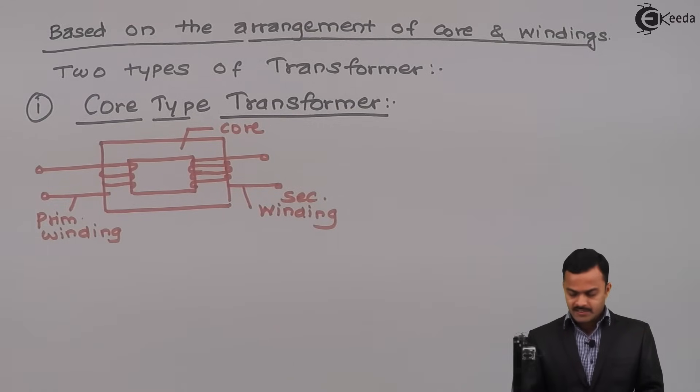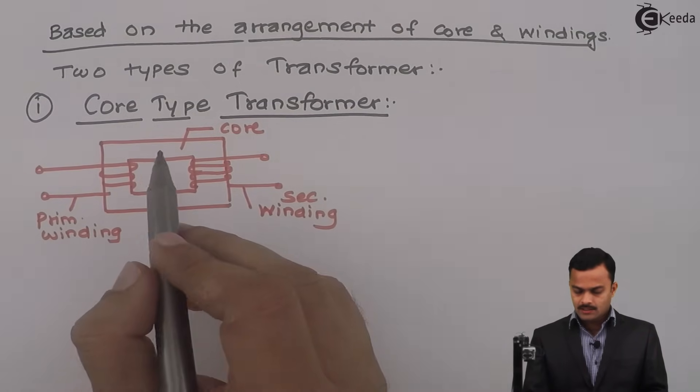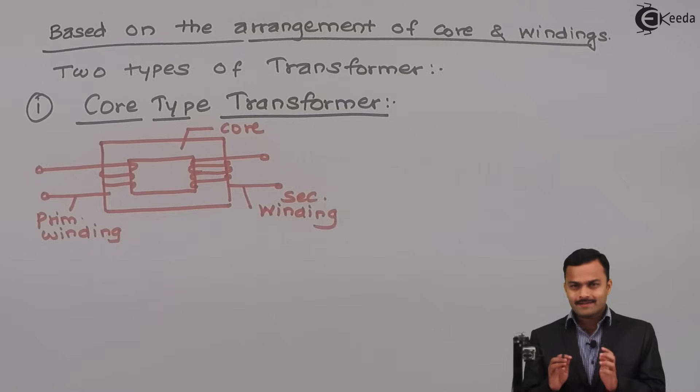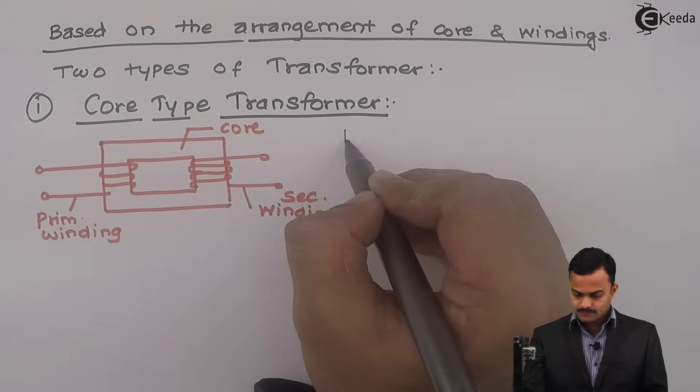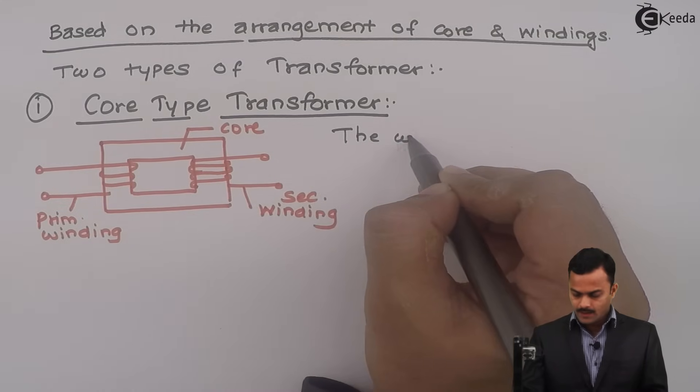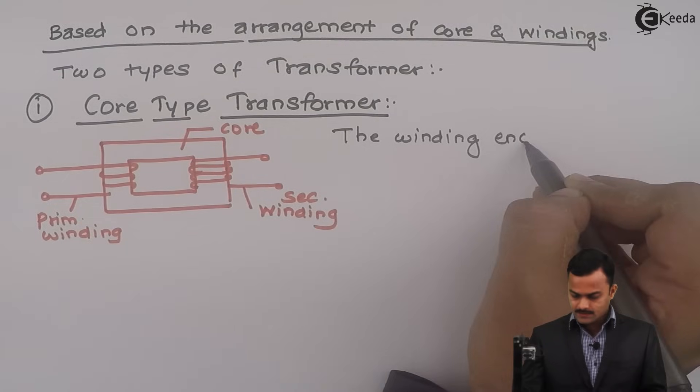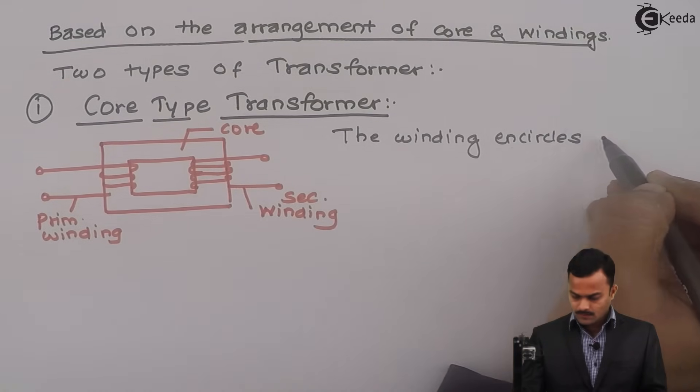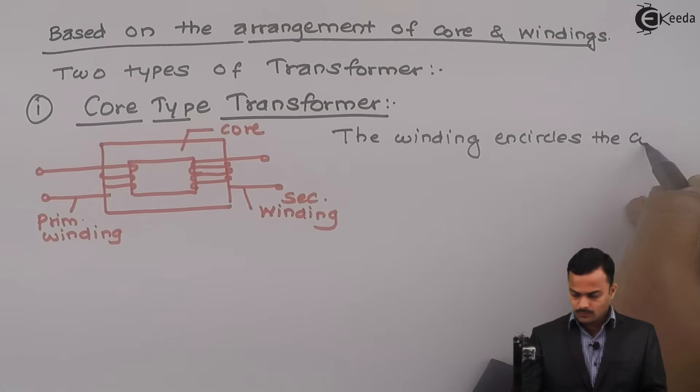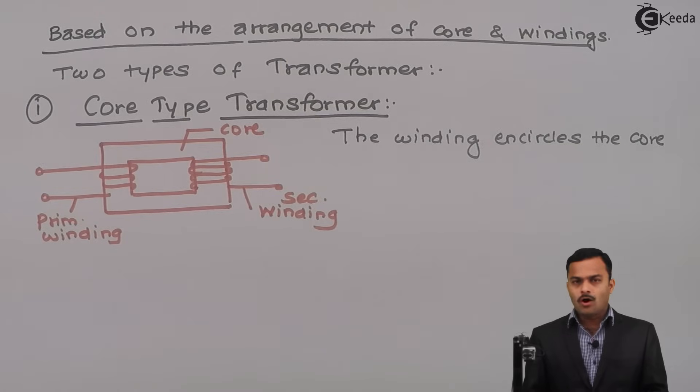Now, what is so special about this? Here, if you see core is inside and then we have windings. So I can say the winding encircles the core. Or you can say core is surrounded by winding.